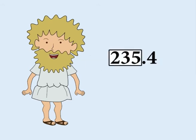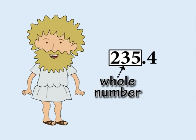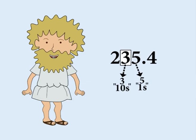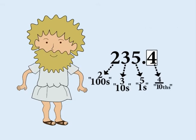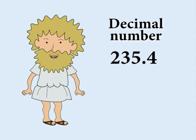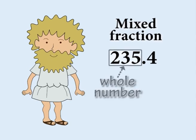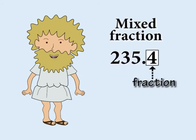The number to the left of the decimal point is a whole number. For example, in the decimal number two hundred and thirty five point four, two hundred and thirty five is a whole number made up of five ones, three tens and two hundreds. The number to the right of the decimal point is a fraction — by point four, we mean four tenths. So you can think of decimal numbers as being mixed fractions, with the whole number to the left of the decimal point and the fraction to the right.